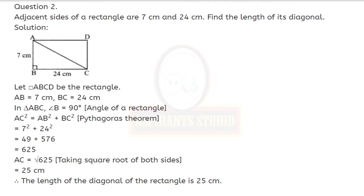Coming to question number 2: adjacent sides of a rectangle are 7 cm and 24 cm. Find the length of its diagonal. Let ABCD be the rectangle with AB equals 7 cm and BC equals 24 cm. In triangle ABC, angle B equals 90 degrees. Applying Pythagoras theorem: AC squared equals AB squared plus BC squared, giving AC squared equals 625. Taking square root, AC equals 25 cm. Therefore the length of the diagonal is 25 cm.